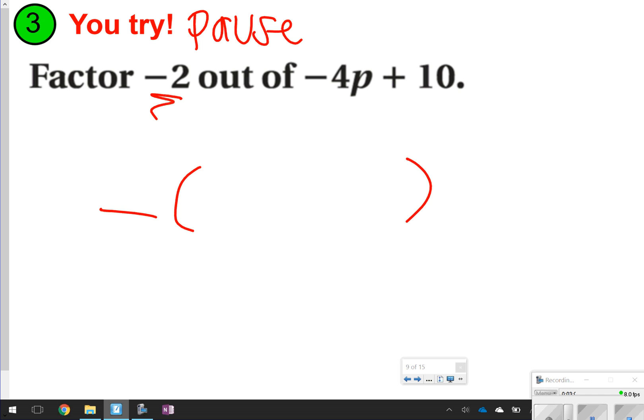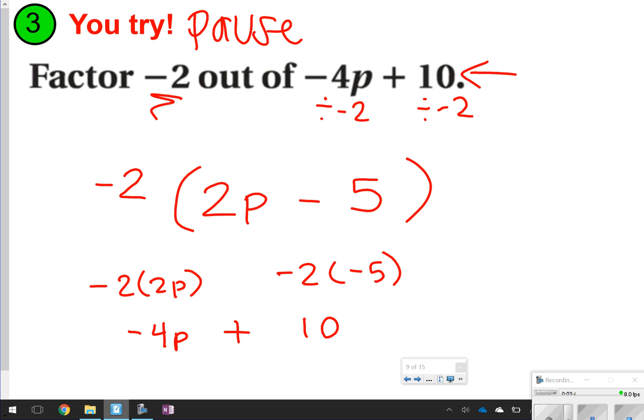All right, so by now you have tried the question. Let's go ahead and check. So factoring negative 2, that means you're just going to be dividing by negative 2. I know that whatever I'm factoring needs to go on the outside here. So negative 2 would be going on the outside of the parentheses. Negative 4 divided by negative 2 is going to be 2, and then I just keep my variable p. 10 divided by negative 2 is going to be negative 5, so I'll just write minus 5. To make sure that this answer is correct, I can redistribute the negative 2 to see if I end up getting my original expression, negative 4p plus 10. Negative 2 times 2p is negative 4p, and negative 2 times negative 5 is 10. That's exactly what we got originally, so we know that this is our correct answer.